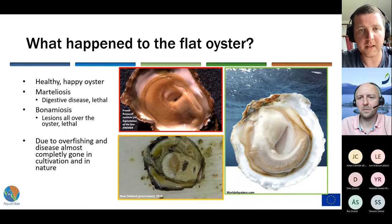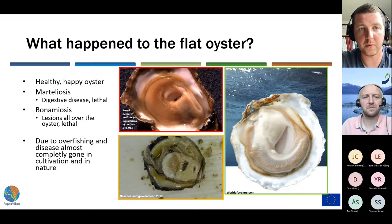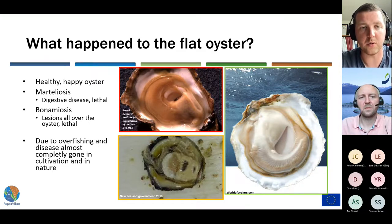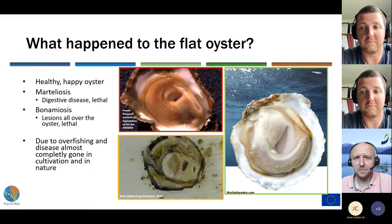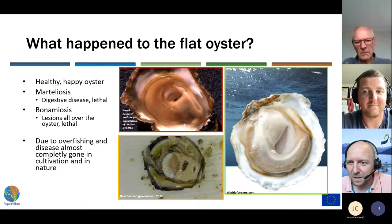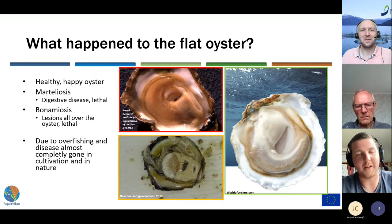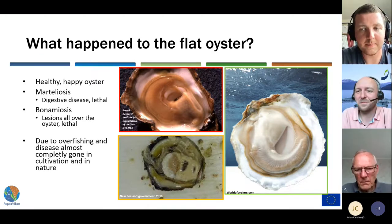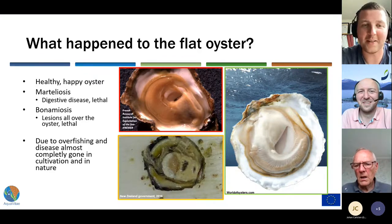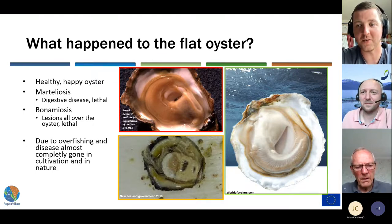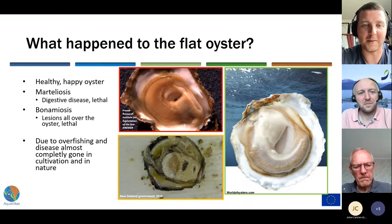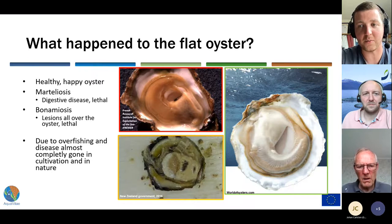Here are a couple of them. In green on the right side we have a happy flat oyster, the way it's supposed to look when opened. In the red box on the top, we have an oyster which suffers from martyliosis, a digestive disease that is eventually lethal. In the orange box at the bottom, we have an oyster which suffers from bonamyosis, which causes lesions all over the oyster and is also eventually lethal. These diseases wreaked havoc together with fisheries amongst the oyster reefs in Europe, and altogether caused the oyster reefs to completely disappear in certain parts and face extinction in other parts of Europe.